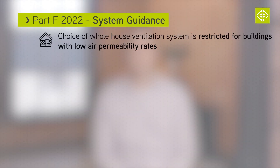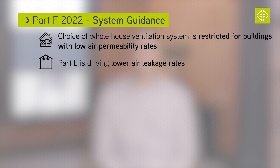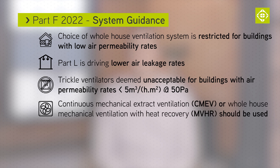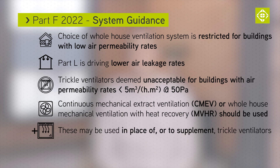For whole house ventilation, the choice of system is restricted for buildings with low air permeability rates. Part L of the building regulations is driving lower air leakage rates. When buildings are designed with air permeability rates less than 5 metres cubed per metre square per hour at 50 pascals, trickle ventilators are not deemed acceptable. In this case, continuous mechanical extract ventilation (CMEV) or whole house mechanical ventilation with heat recovery (MVHR) should be installed in place of or to supplement the trickle ventilators.